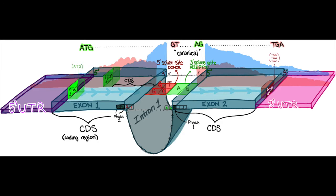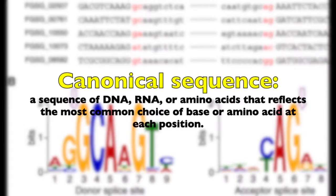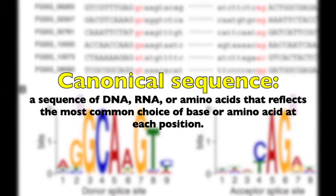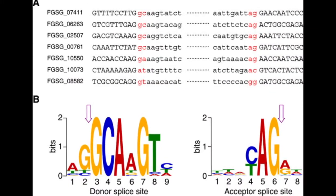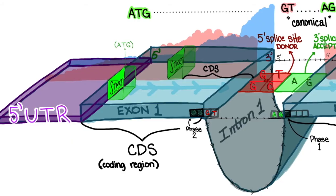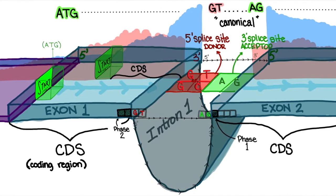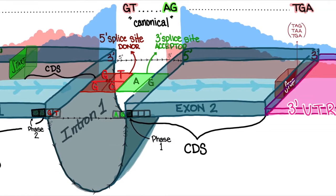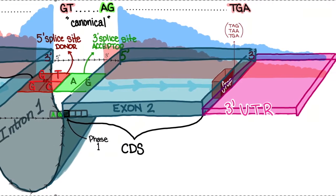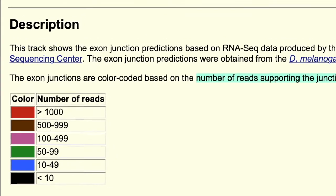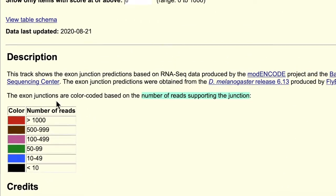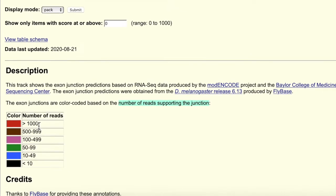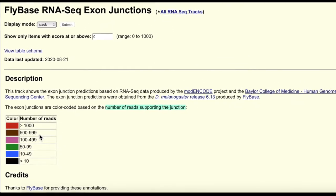The track also takes into account the potential canonical splice site donors and acceptors at each junction, so that there's a GT — and occasionally a GC — starting off each intronic region, and ending with an AG just before the coding region starts back up again. For the splice junctions predicted track, the warmer colors such as brown, red, and pink have the most supported reads, whereas cooler colors like green, blue, and black have the least.